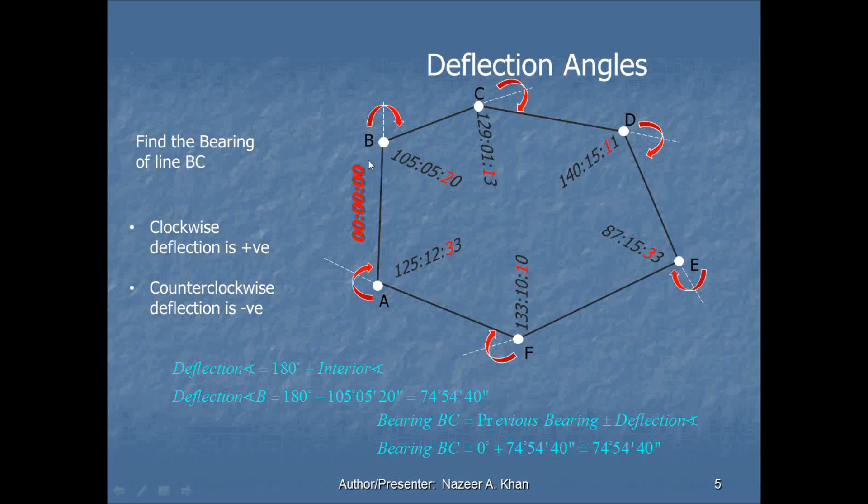That deflection angle is calculated by subtracting the interior angle from 180 degrees. As we know, on either side of a line is 180 degrees. It's called a straight angle. So if I were to subtract 105 degrees 05 minutes 20 seconds from 180, I will get that deflection angle. I add it to the previous bearing, and I should get the new bearing. Let's go and look at that.